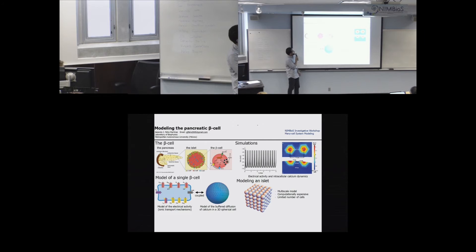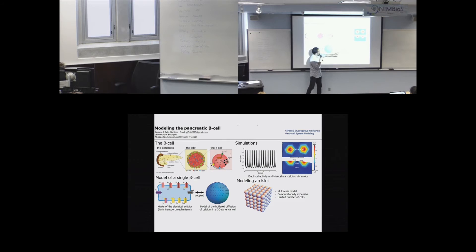The next step is to model an islet, because the beta cell is not isolated in the pancreas — it is coupled with other cells forming islets. We are trying to go from a single cell to an islet, but it has been a computational challenge. If you have any ideas on how to do this, please let me know.